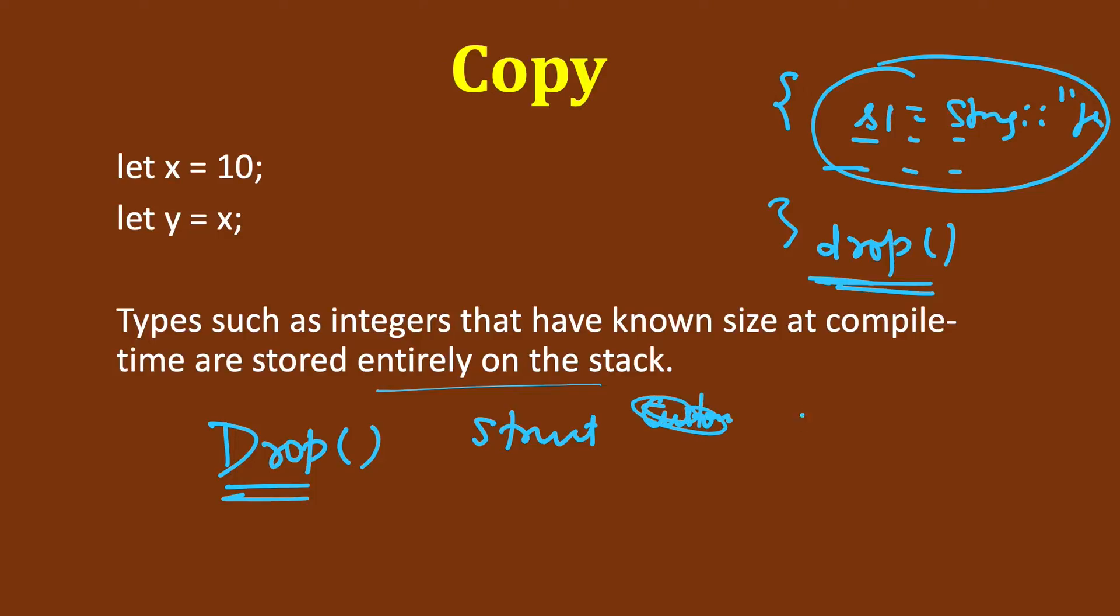We have a struct A and it has a data, let's say of the same string type. Then we can define implement drop trait, so impl drop for this class A, and here we will define a drop function and do our custom things when the drop is called.